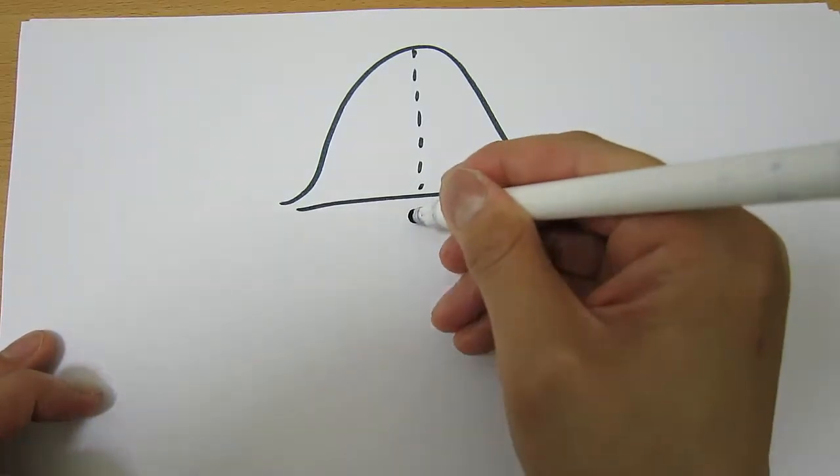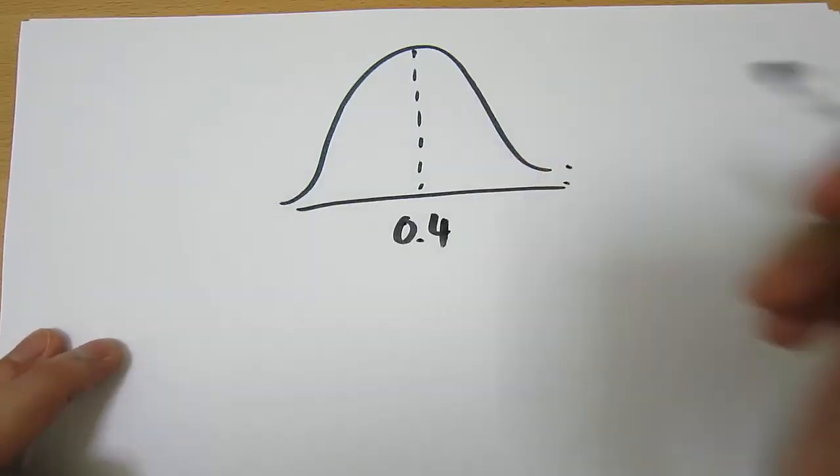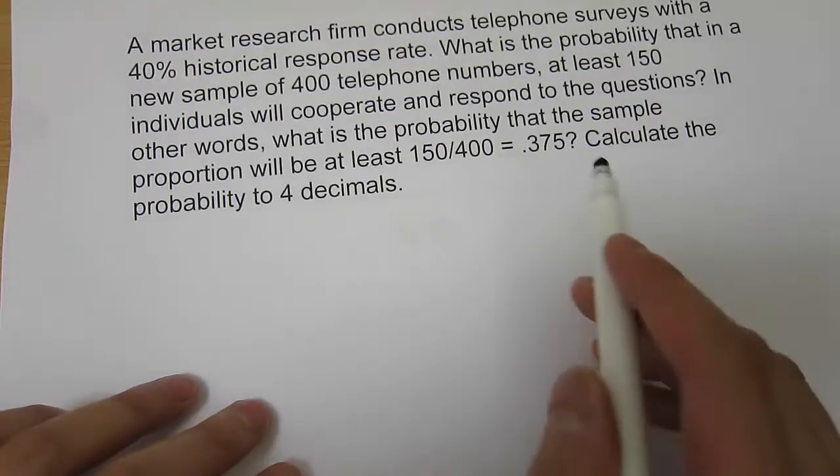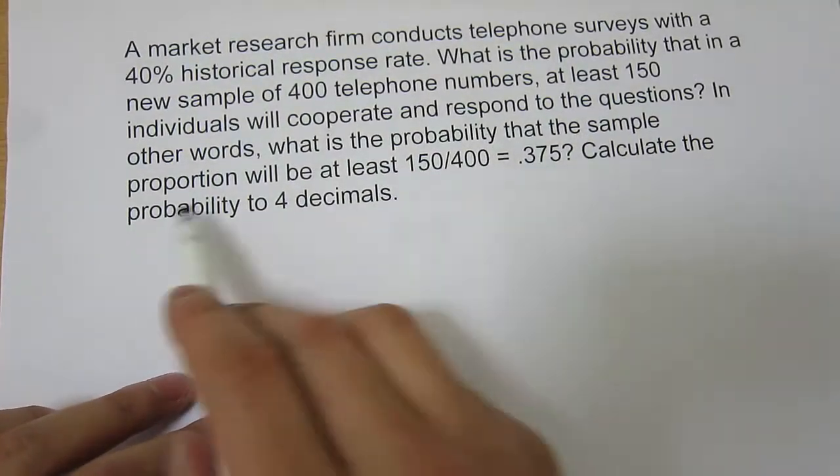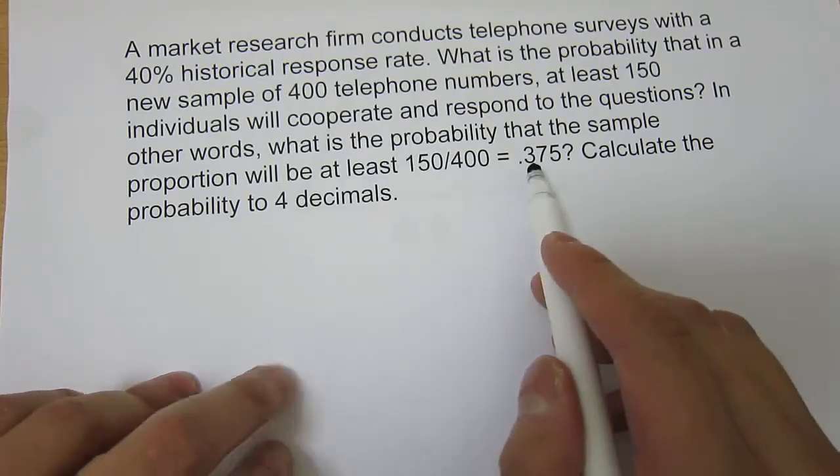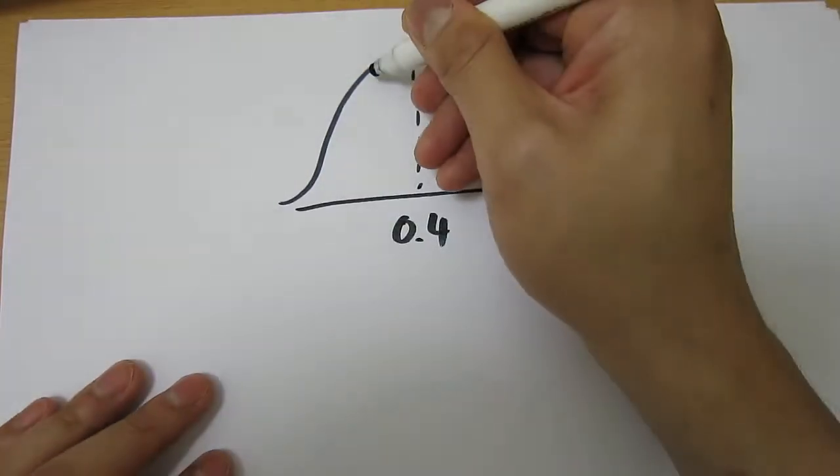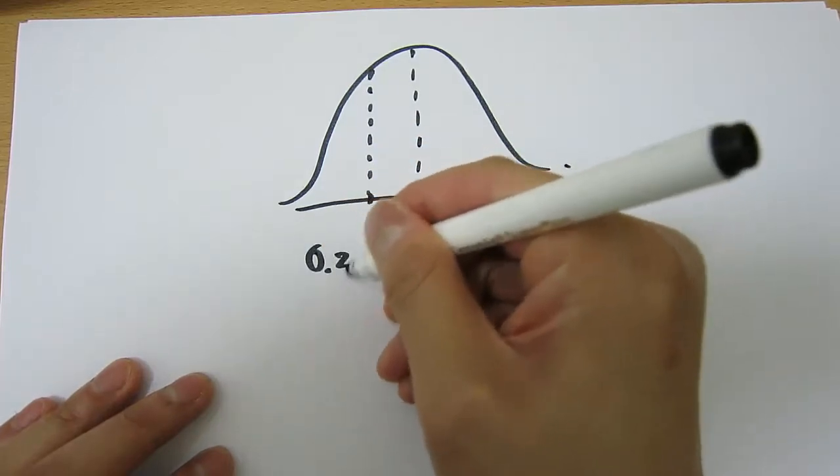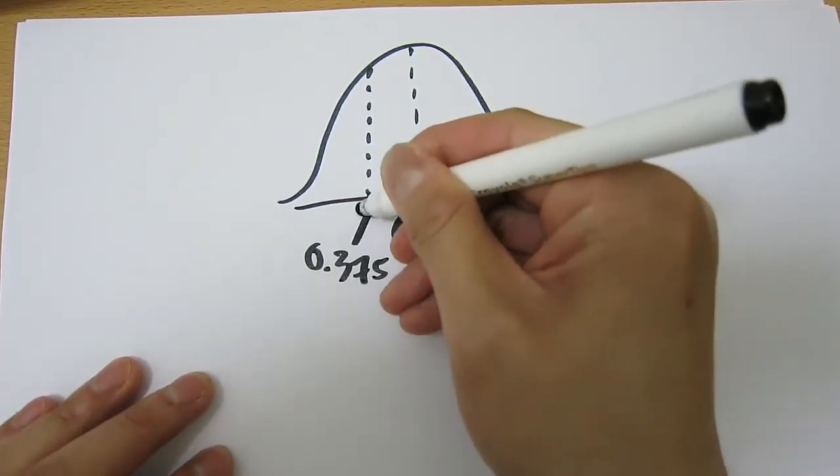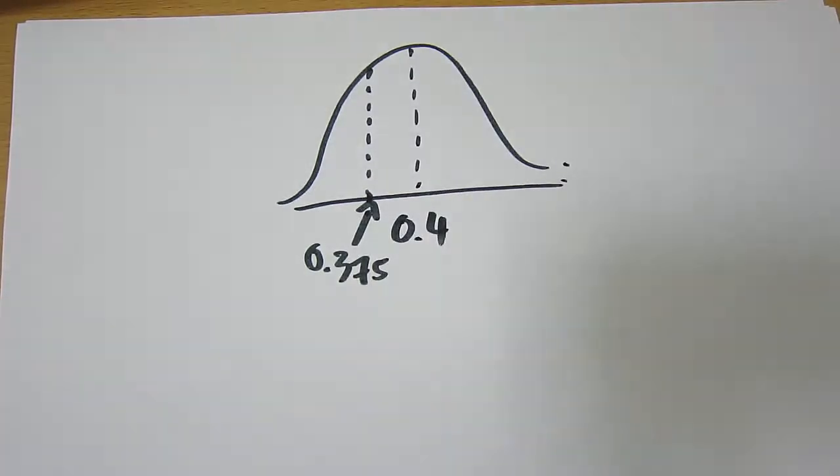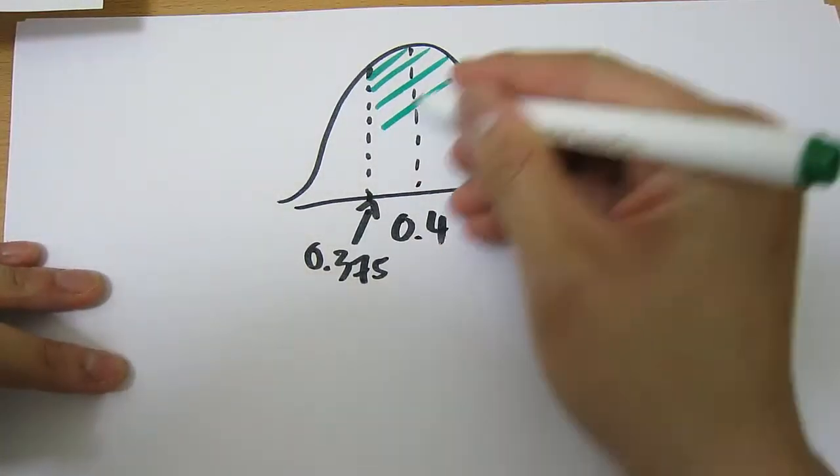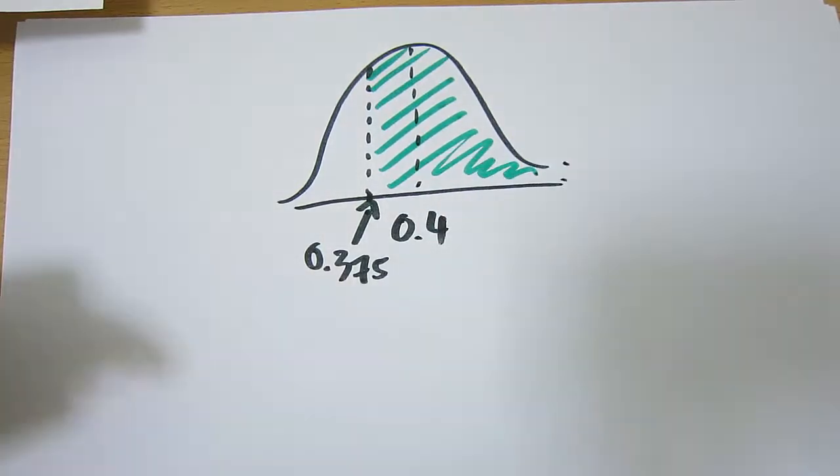We're told that the population mean is 0.4. Now if we look back at the question, they want to know what's the probability that the sample proportion will be at least 0.375. So 0.375 is here somewhere, below the mean. And at least, so basically what we want is this area here.